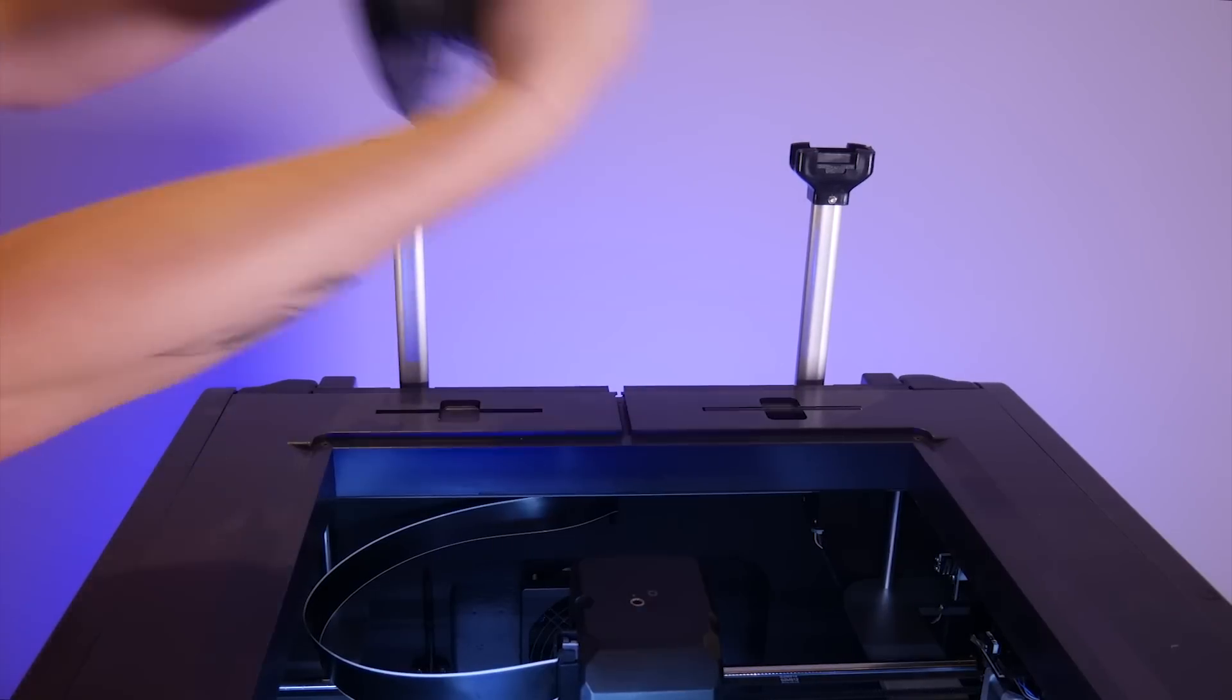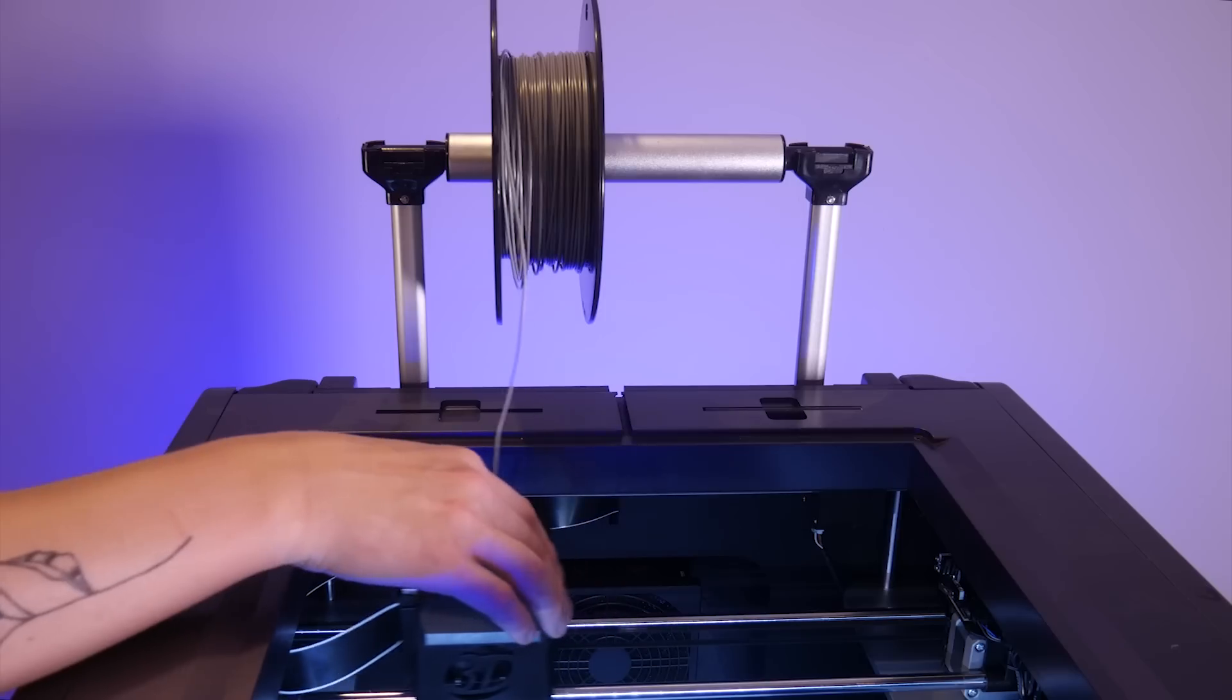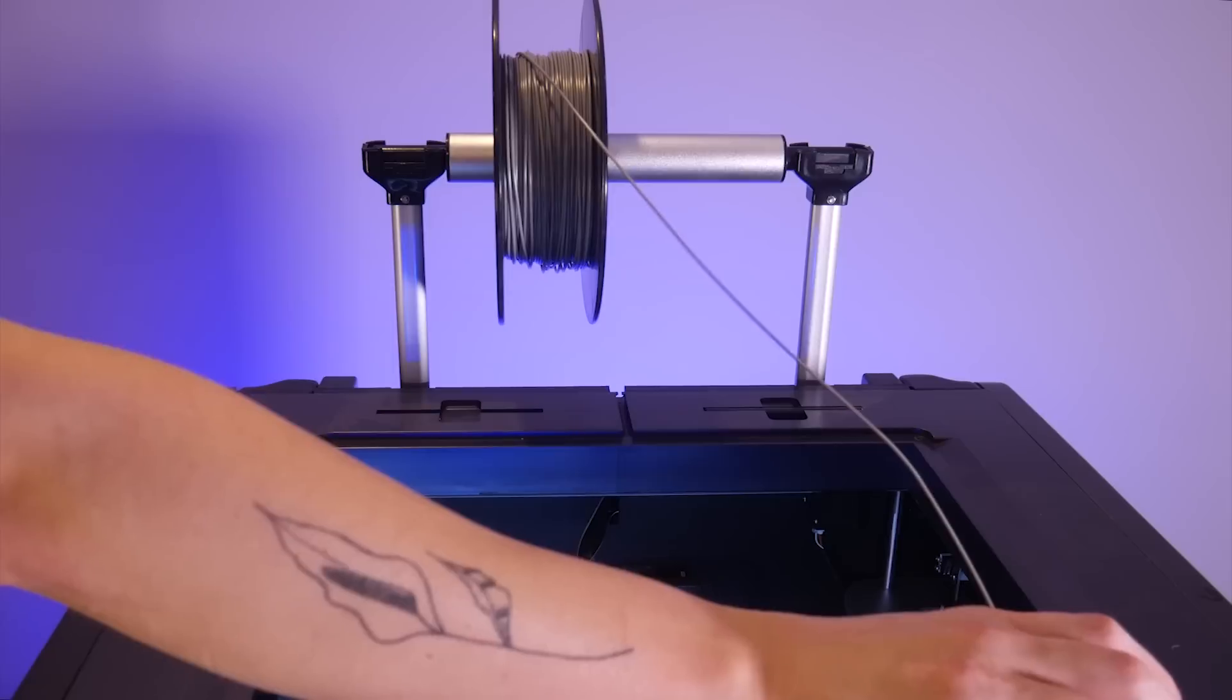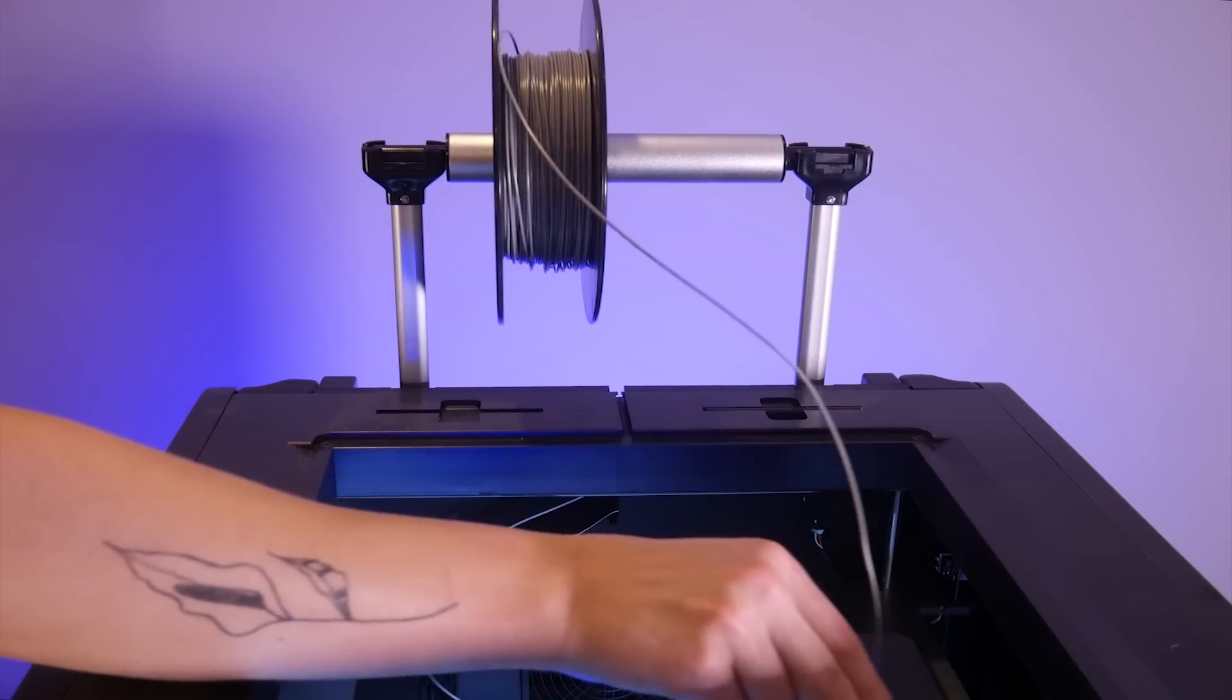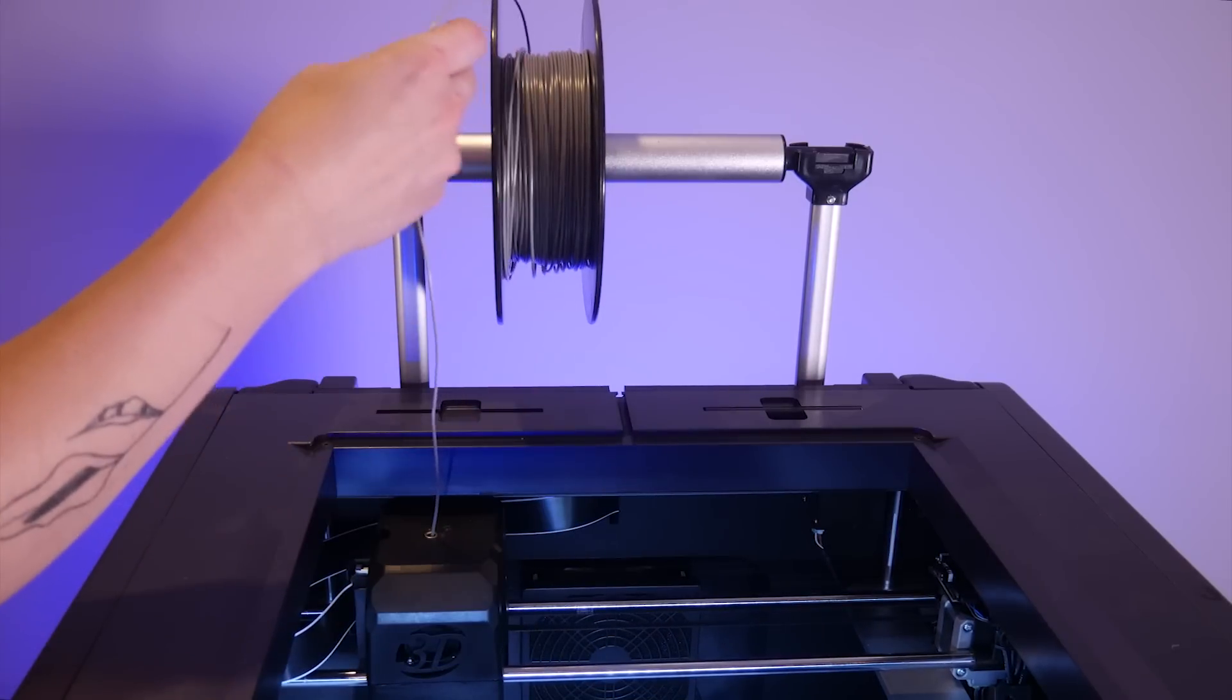The luggage handle style external spool holder is a bit of an issue. I had a few tangles with brand new filament rolls where the filament slipped over the edge of the spool and wrapped around the spool holder itself.